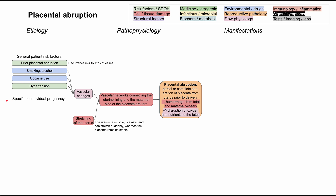The next group of risk factors are specific to the individual pregnancy, whereas the previous ones might describe the mother generally. These may vary from one pregnancy to the next. First, you have preeclampsia — a condition that also involves vascular changes and can alter how the uterus is connected to the placenta. You also have polyhydramnios, a condition of having too much amniotic fluid during pregnancy. If there's too much fluid inside the uterus, it's going to stretch the uterus, making that connection between the uterus and the placenta tighter due to increased pressure.